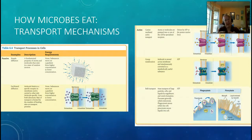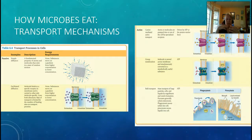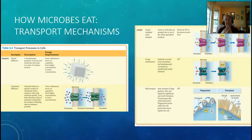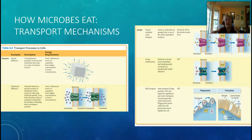Active transport requires energy — the cell must really want this molecule in order to bring it in. The general reasons are that it's really big, or the concentration inside the cell is already higher than outside but the cell wants to maintain a high balance of it. The first type is carrier-mediated active transport: just like facilitated diffusion except it requires energy. A protein carries the molecule across using ATP and deposits it within the cell, even against a higher internal concentration.